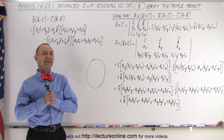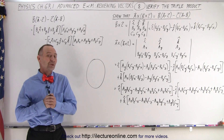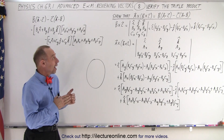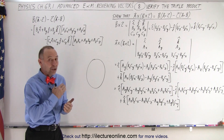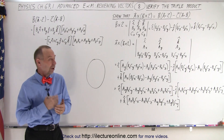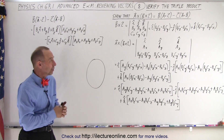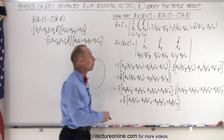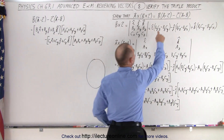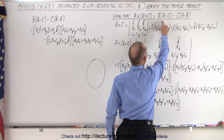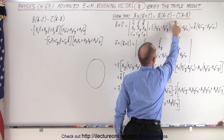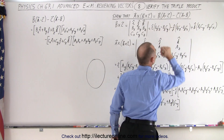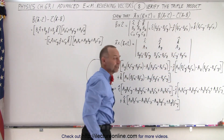Welcome to iLectroOnline. We're going to show you how the triple product A cross B cross C is equal to the product of vector B with A dot C minus the vector C times A dot B.